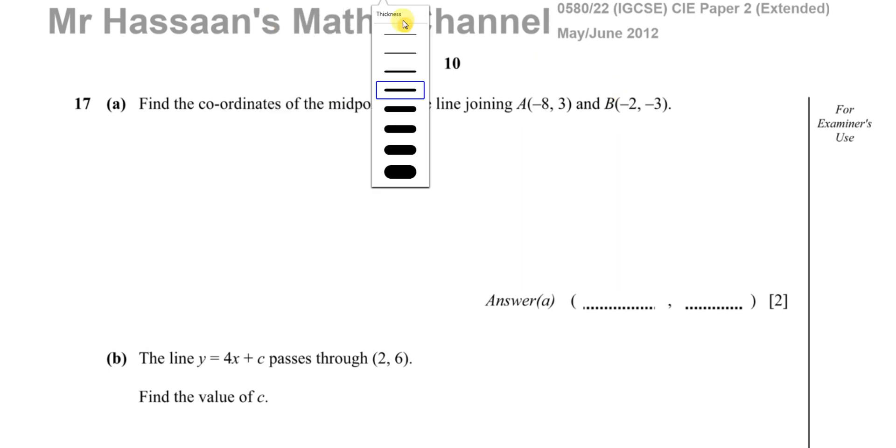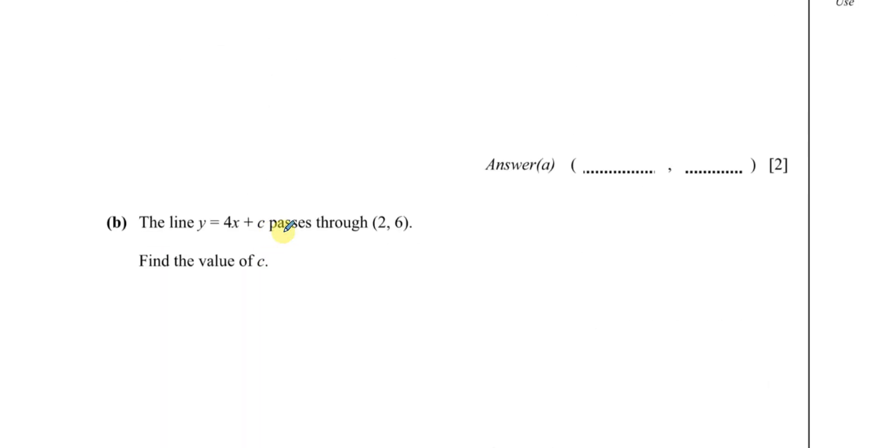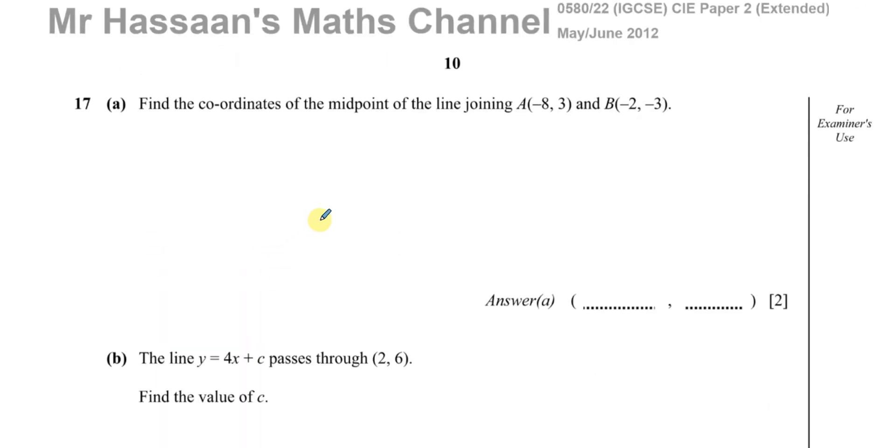This question has been requested for me to answer and I'm going to go through the whole thing. The student asked me to do part C, but I'll just go through the whole question for completeness sake. Part A says find the coordinates of the midpoint of the line joining A and B given by these coordinates.